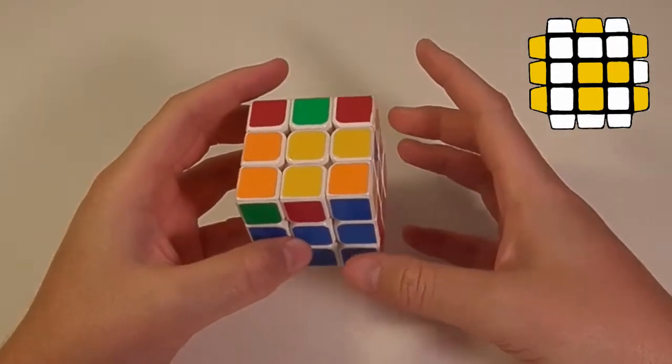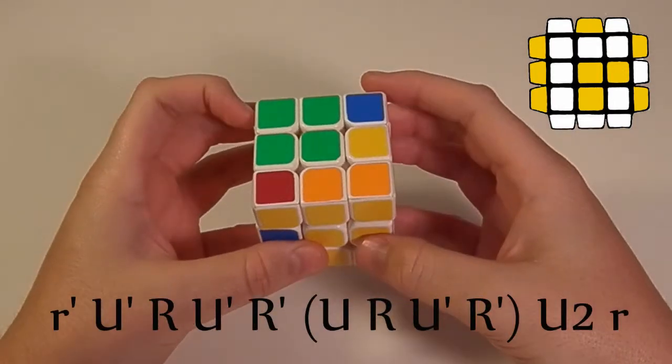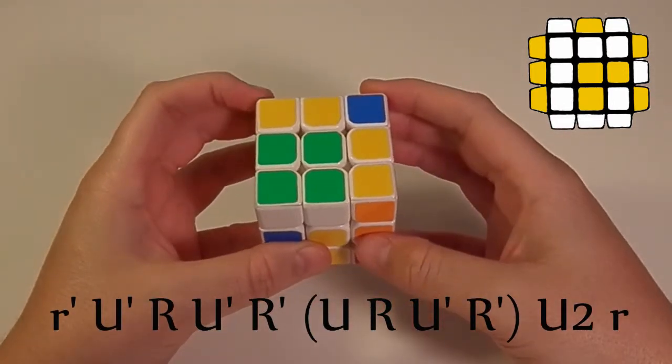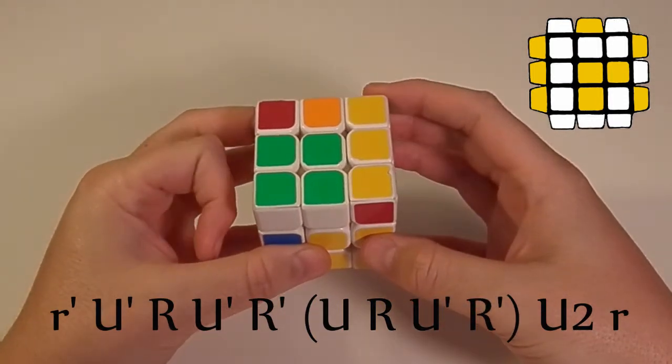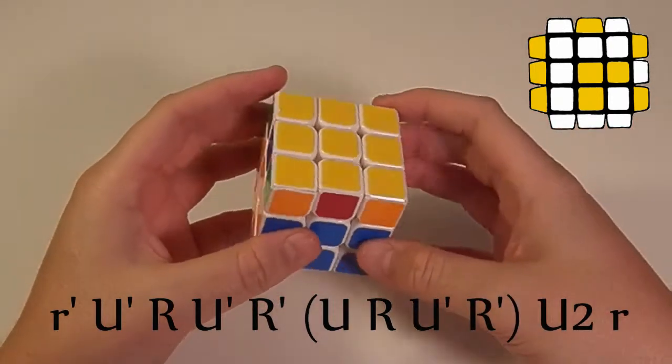And this is the algorithm you use for this case. Small r prime, u prime, r, u prime, r prime, u, r, u prime, r prime, u2, small r. And that will fix your layer.